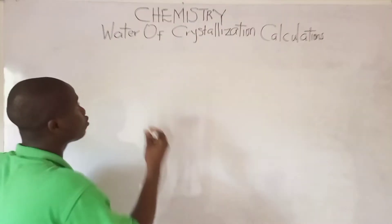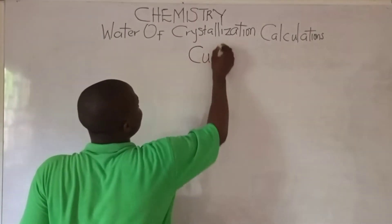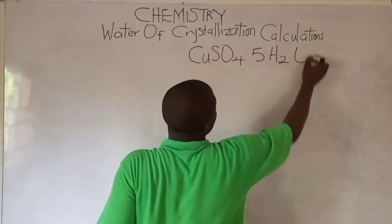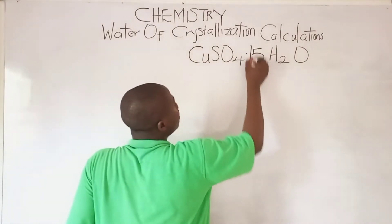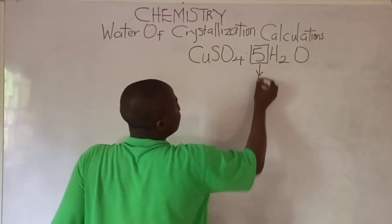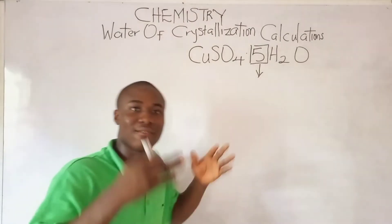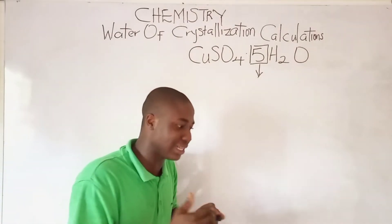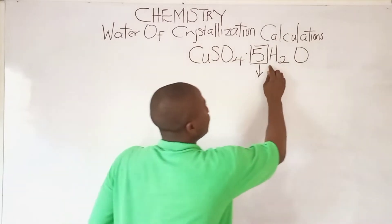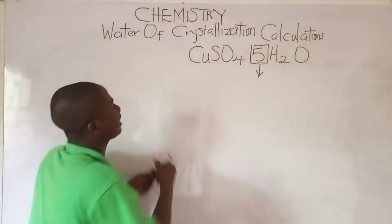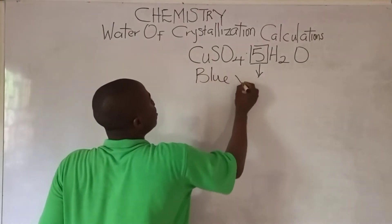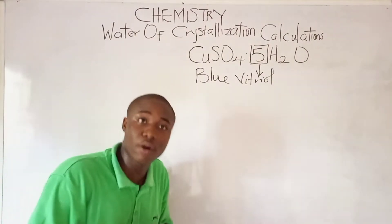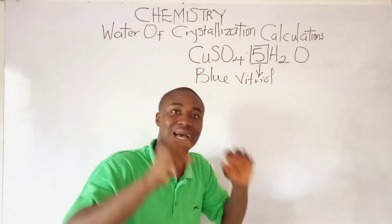For example, this is a compound that possesses water of crystallization — CuSO₄·5H₂O. The number of moles of the water of crystallization is this value here. In exam conditions, we can be asked to calculate the number of moles of water of crystallization in a compound. This compound is called blue vitriol, and it is an efflorescent compound. Efflorescent compounds are compounds possessing water of crystallization.